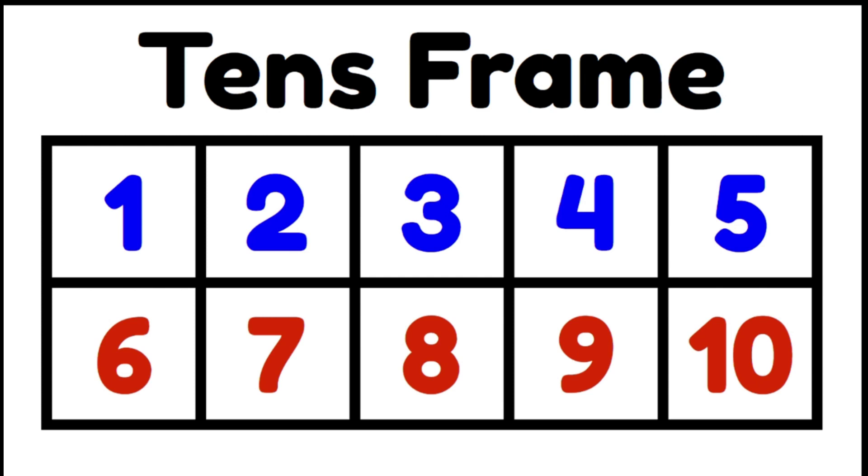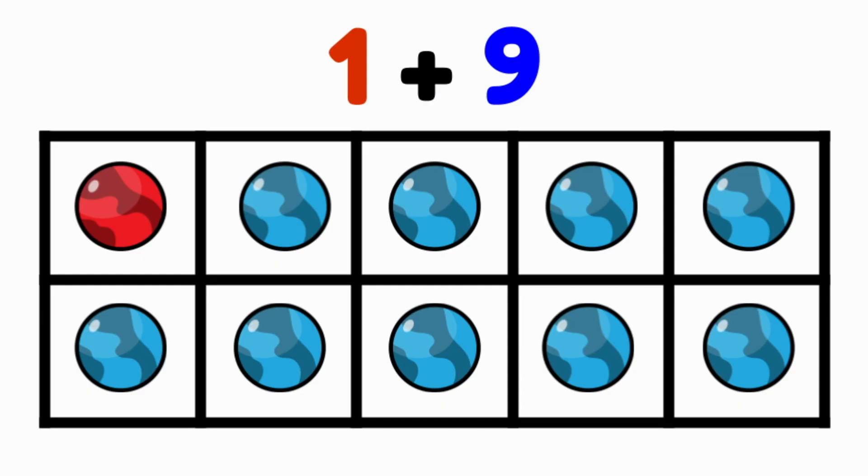We are going to use a 10s frame to help us look at our friends of 10 or our rainbow facts. If I have 1 red marble and 9 blue marbles, all 10 places on my 10s frame are filled up. 1 and 9 go together to make 10. 1 and 9 are friends of 10.